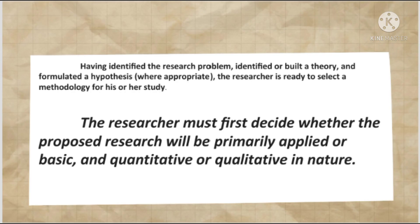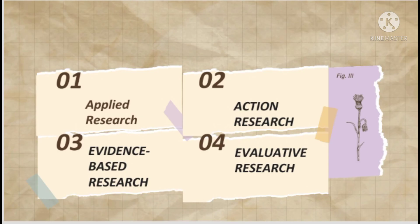In selecting a research method, the researcher must first decide whether the proposed research will be primarily applied or basic, and quantitative or qualitative in nature. The researcher must select the best and most appropriate method for his or her study. The methods fall into these categories: Applied Research, Action Research, Evidence-Based Research, and Evaluative Research.